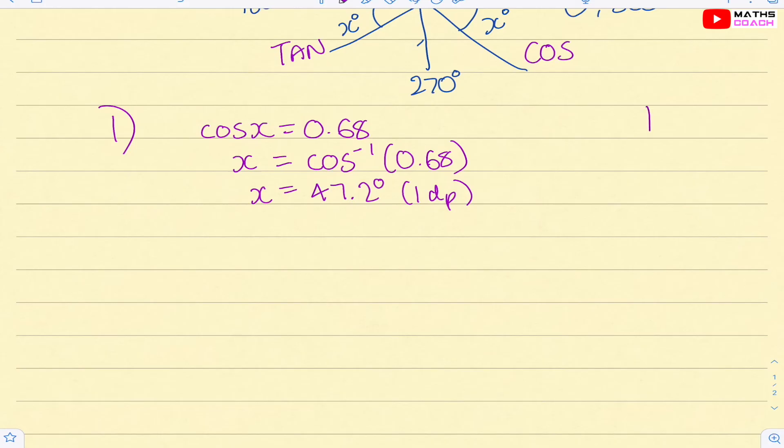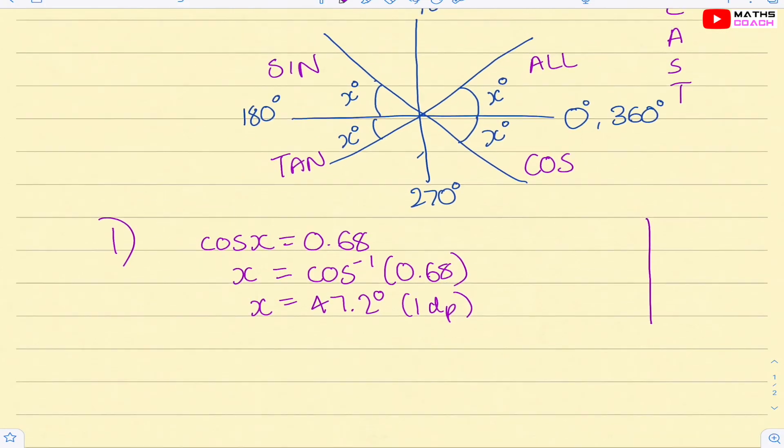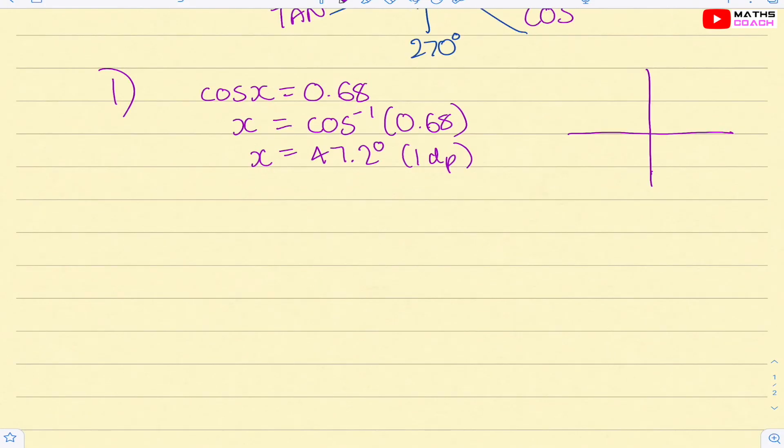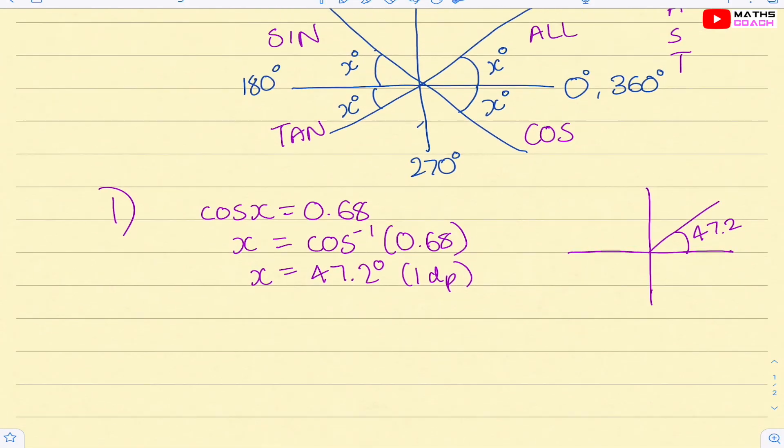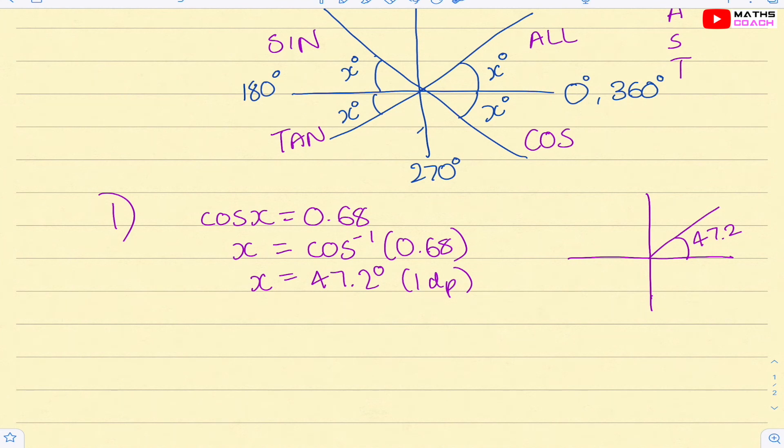Now, if we go back to our CAST diagram that I introduced to you earlier, when you draw your CAST diagram, you have 47.2 and it will be here. Now let me explain why it should be here. So firstly, we know that looking at this equation, cosine is positive. Now, in our CAST diagram, there's only two places that cosine is positive.